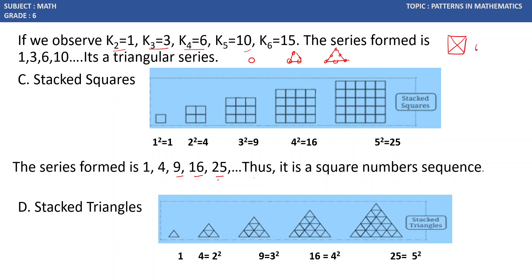Next one is stacked triangles. Stacked triangles are a group of triangles. This is similar to stacked squares. But this figure is in the form of triangle. That is why we are calling it as a stacked triangle. If we observe, for the second one, we do have the 4 small triangles. 1, 2, 3, 4. So, we are considering this 4 as 2 square. Similarly, for the third one, we do have 3 square. 4th one, 4 square. 5th one, 5 square. So, this is the stacked triangles. So, the series formed is 1, 4, 9, 16, 25. Thus, it is also a square number sequence.